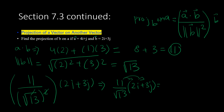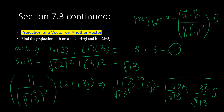So it's 22 over square root of 13 î plus 33 over square root of 13 ĵ. This is my final answer — this is the projection of B on A.